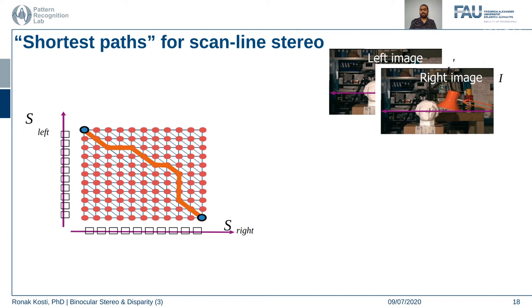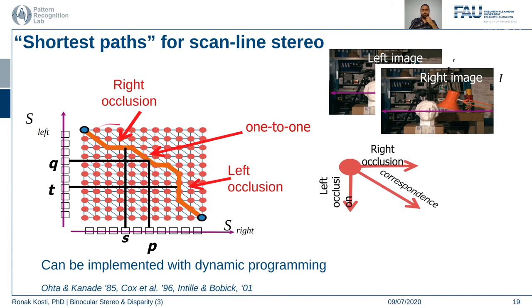Once we fix a correspondence on the left scan line, we start matching along the scan line in the right image, moving one pixel at a time. When we find a match, we move one pixel further on the left side and start looking again. When you move one pixel on the left and find an immediate correspondence on the right, it means both images advance together — this diagonal path in the graph represents a one-to-one correspondence.